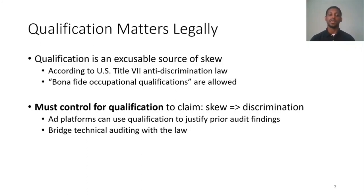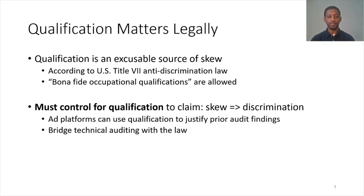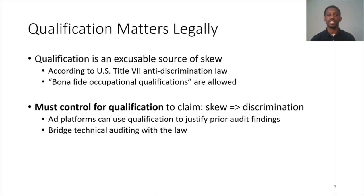So in our work, we first discuss that qualification is an excusable source of skew in U.S. anti-discrimination law. Specifically in Title VII, employers and advertisers can use bona fide occupational qualifications as a legal defense against claims of discrimination. Therefore, in order to claim that audit findings that show skew are indeed discrimination, one must control for differences in qualification. Otherwise, platforms can use qualification to justify the audit's findings. Even though we focus on employment, our bigger hope is that auditing methodologies better aligned with the law can be more useful in enforcing anti-discrimination law in practice.